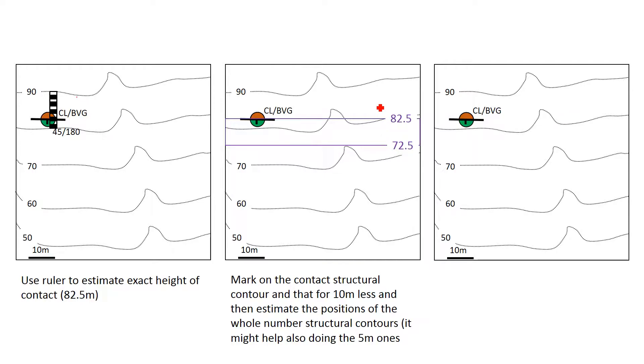So that can be done again with a ruler or estimating, so now we've put on some structural contours of 80, 85, 75, 70, and 65 just based on those first two that we put on at 82 and a half and 72 and a half, and kind of estimating the distances between them to where 80 and 75 was.